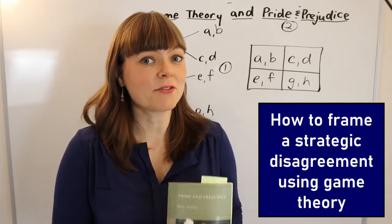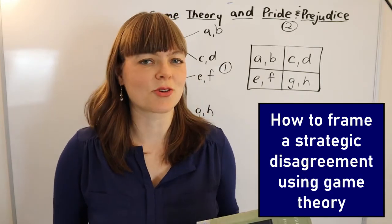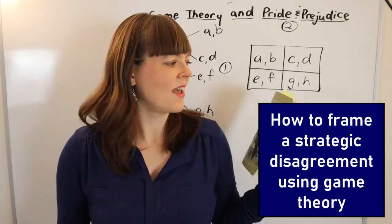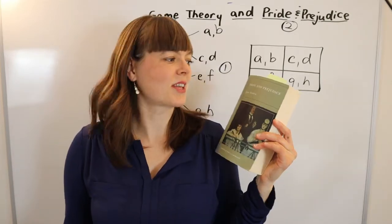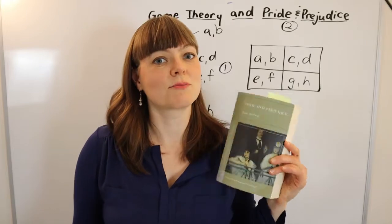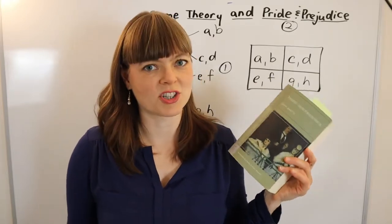In this video I'm going to tell you how to frame a strategic disagreement you're having with someone, and I'm going to do it using the disagreement between Elizabeth and Charlotte from chapter six of Pride and Prejudice.